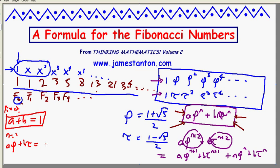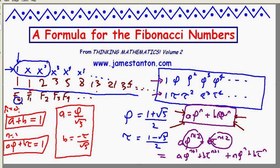I want a times phi to the 1 plus b times tau to the 1 to be the second Fibonacci number, also 1. Okay, this is two equations and two unknowns. It's not much work, I'll leave it to you on the side because I'm worried about my time here, that then follows that a is actually phi divided by the square root of 5. And b turns out to be negative tau divided by the square root of 5.